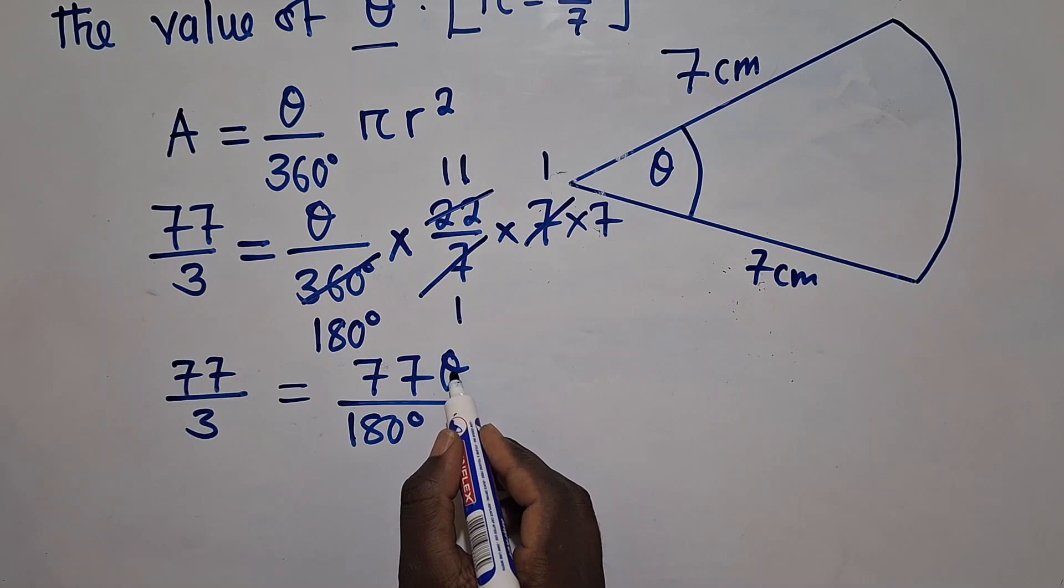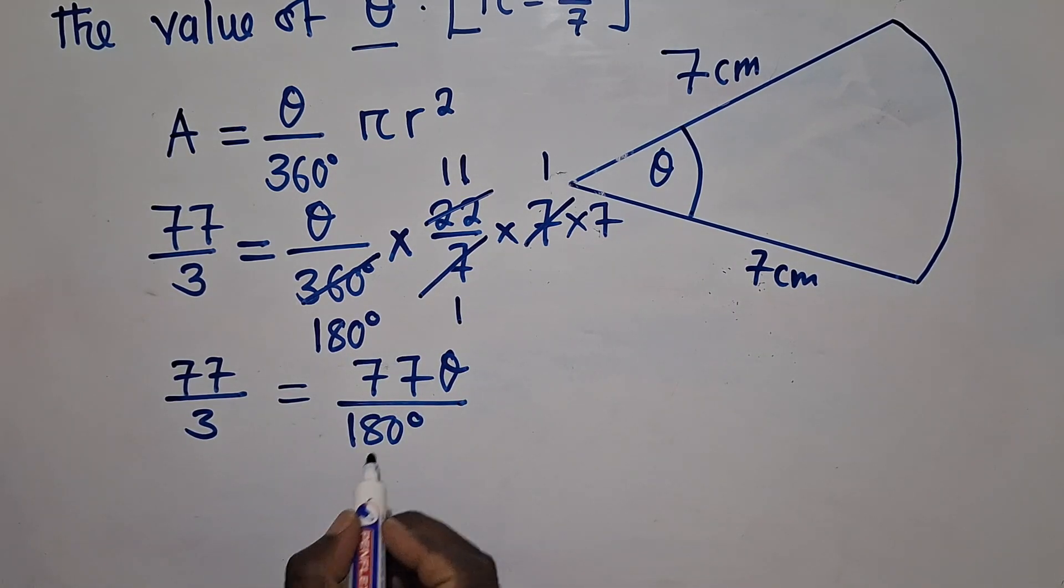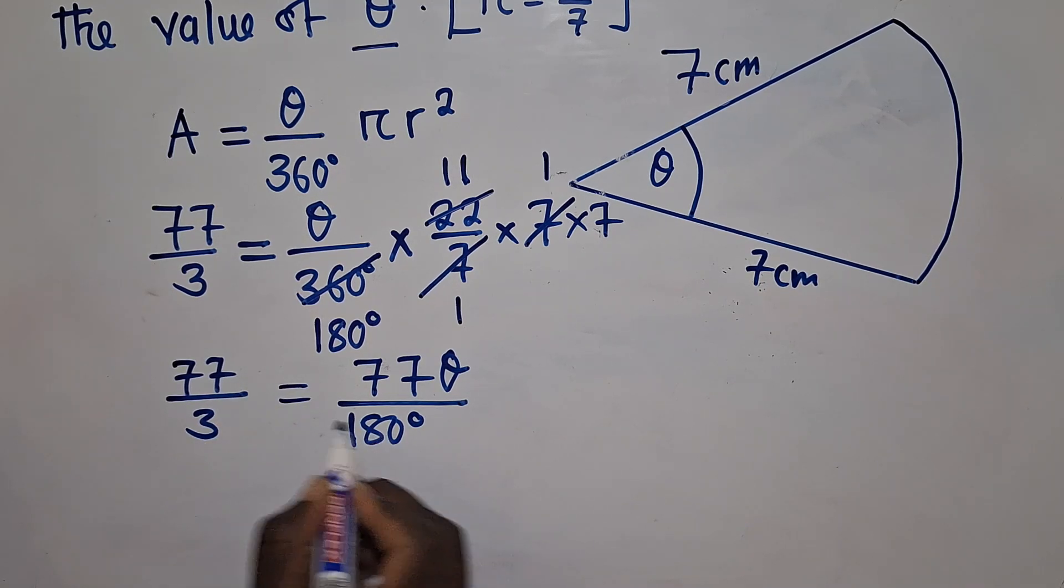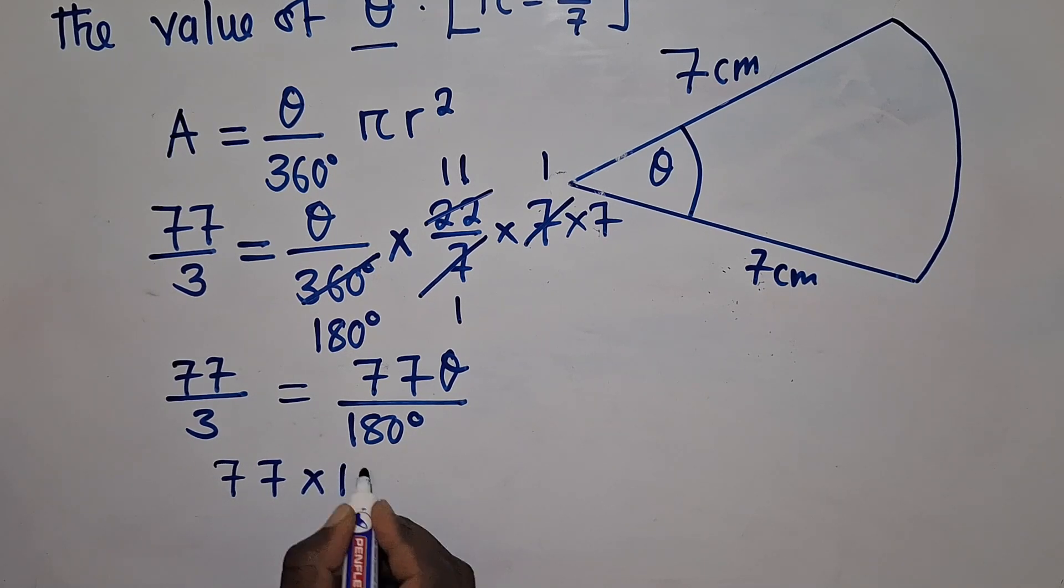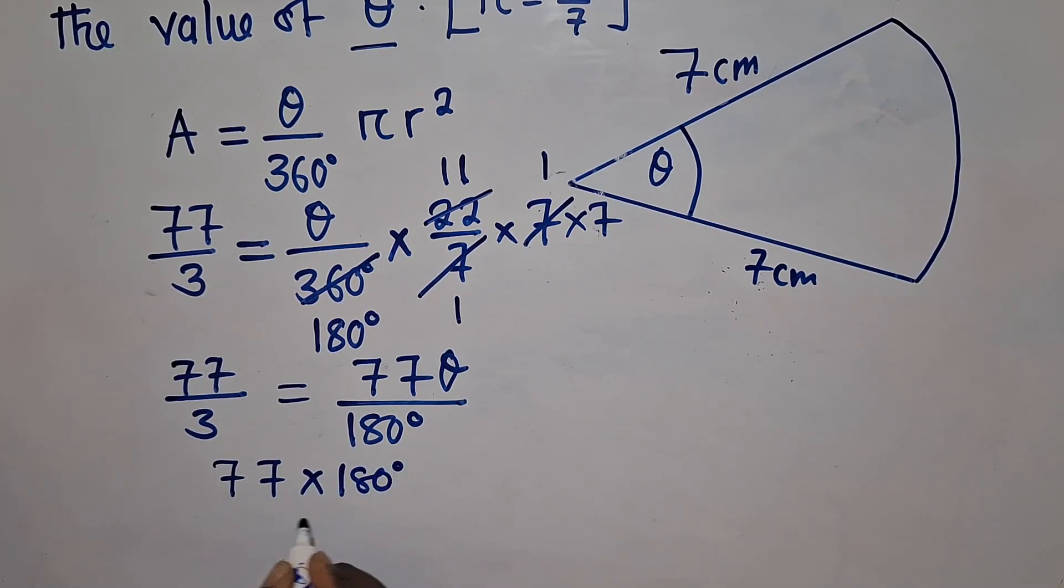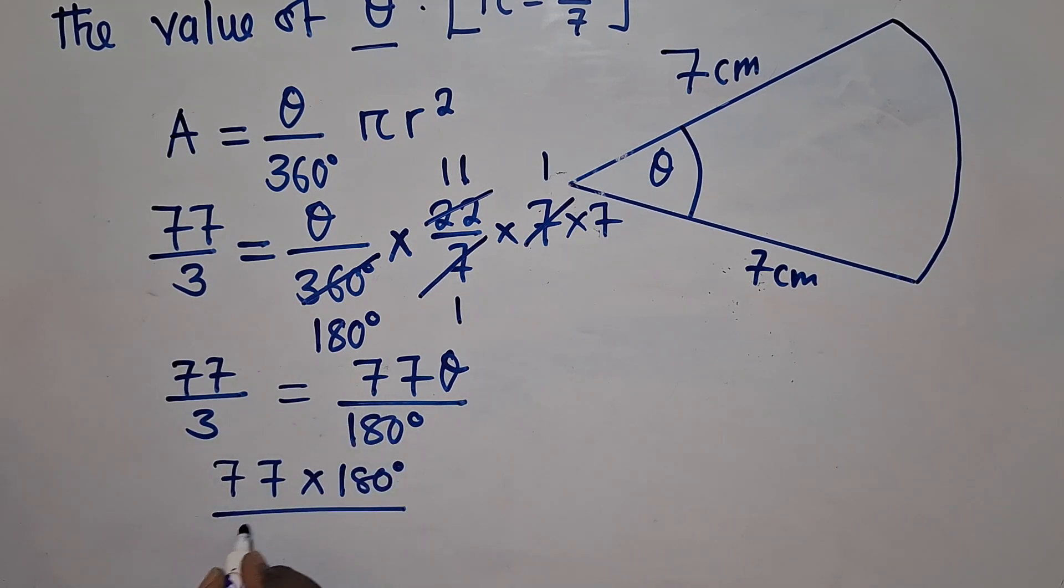So at this point, since we are solving for theta, we can either divide by the same, or if you want, you just say we cross multiply. So this times this will be 77 × 180° over 3 × 77, so 3 × 77 is equal to θ.